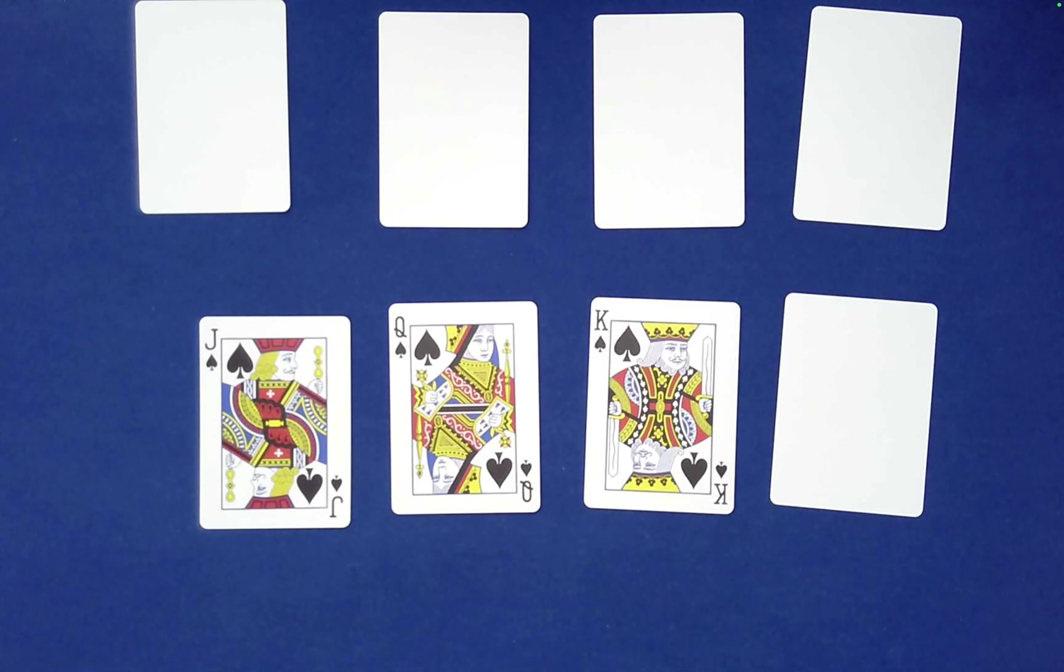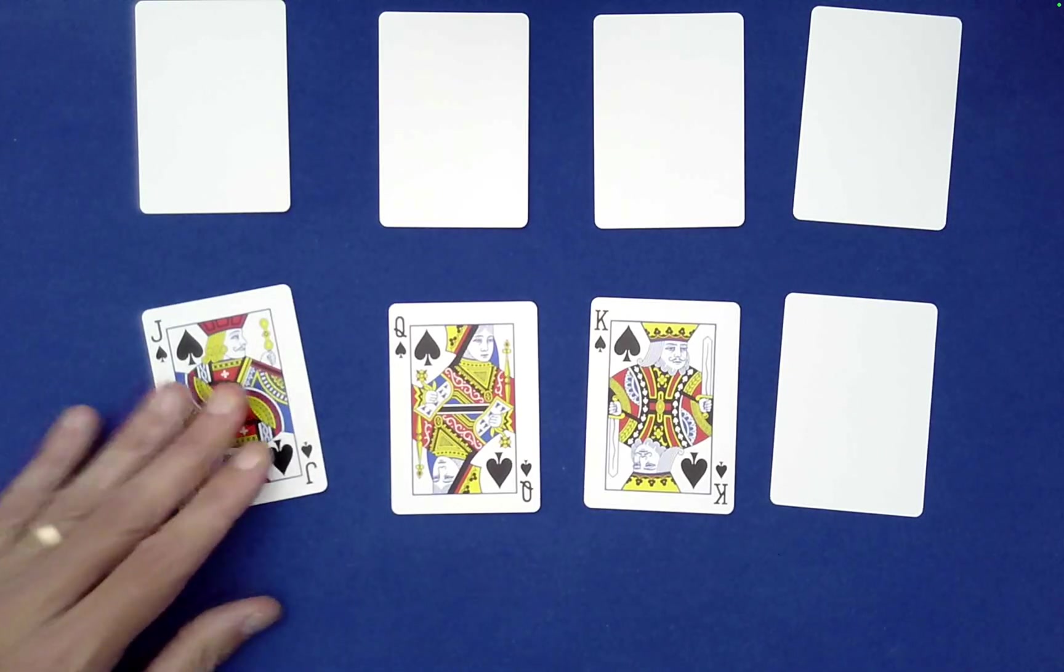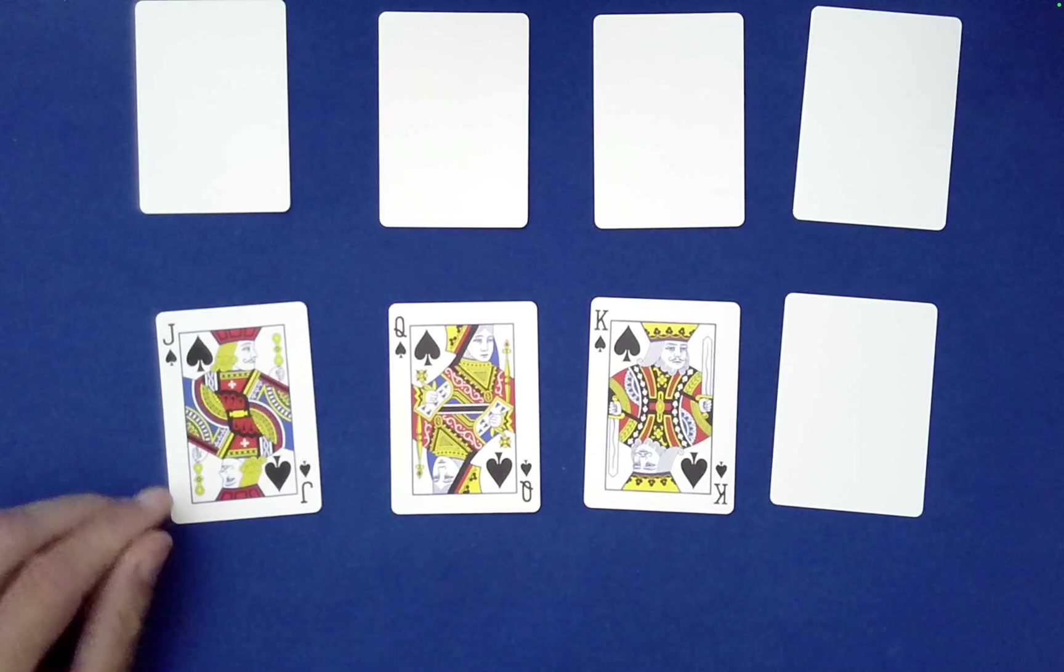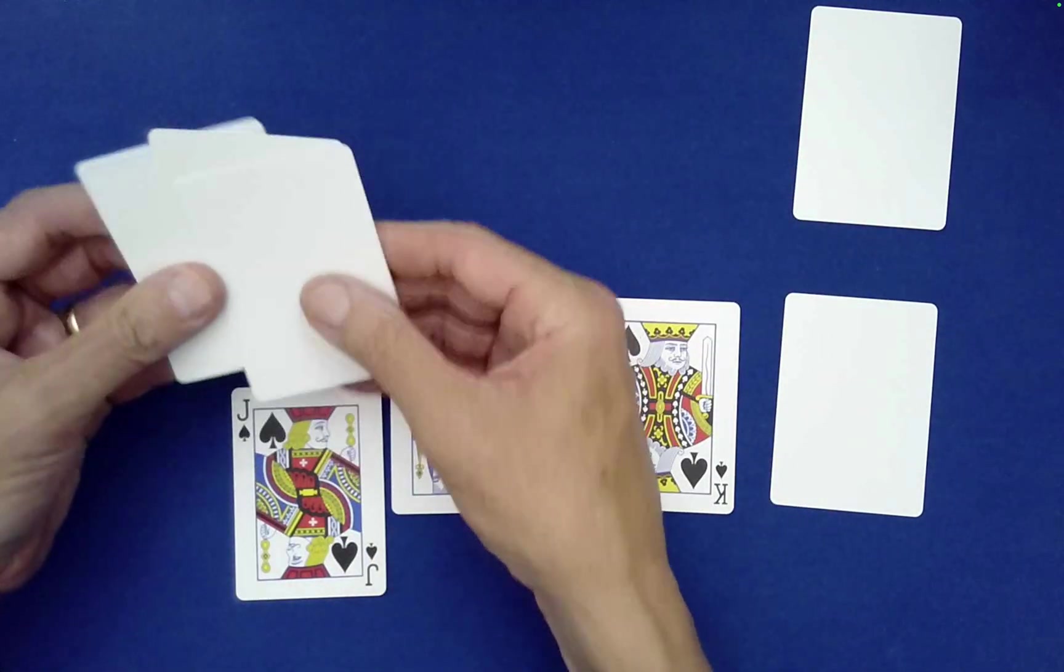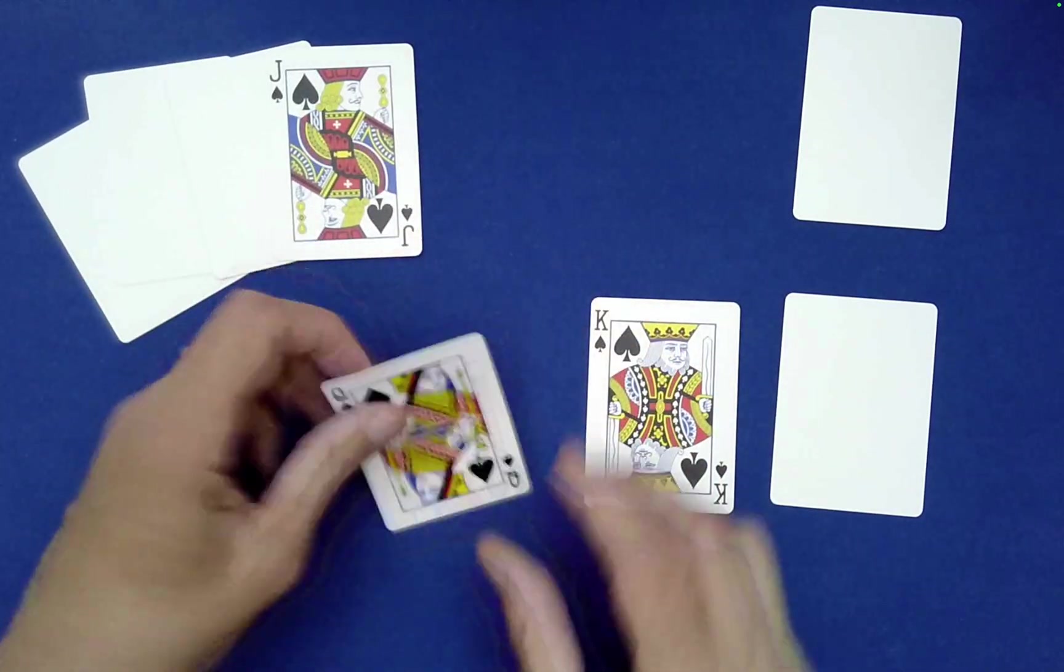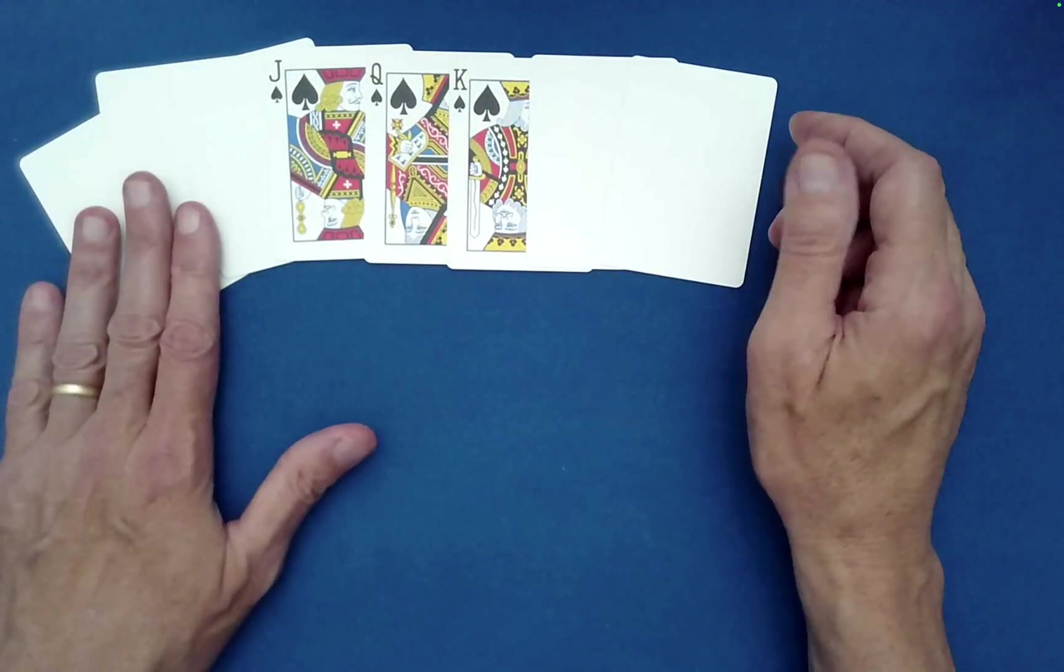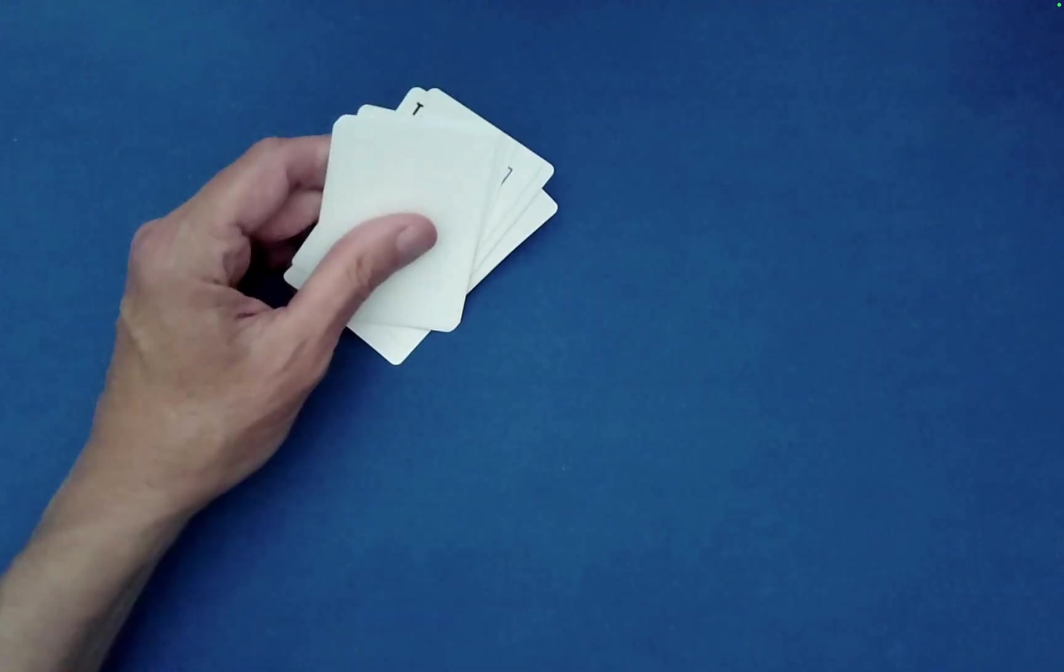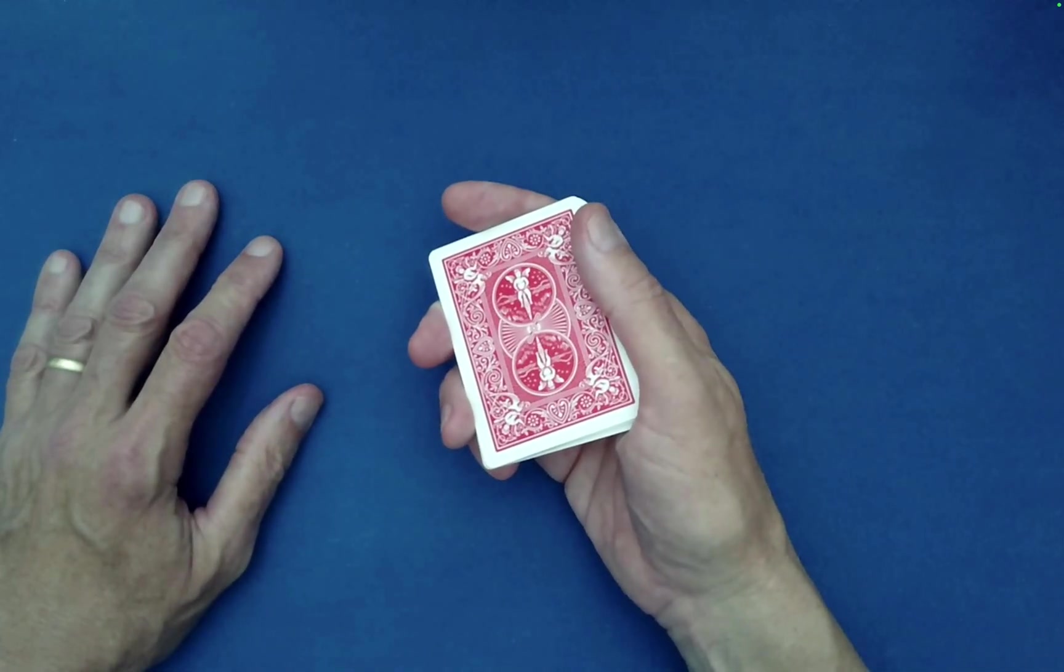What a bunch of nothing for them. In fact, this routine is called Nothing by Warner Miller, so I'll have a link in the description below. Really quickly, this is easy to perform as far as mechanics. You have Jack, Queen, King, and then two blanks. So you have three blanks on top, two at the bottom.